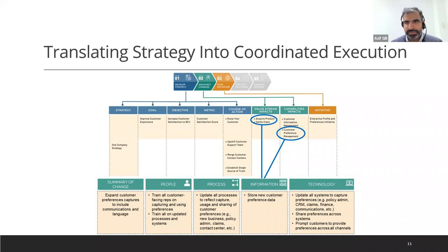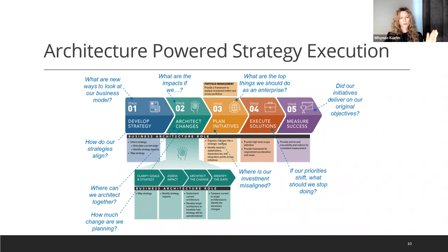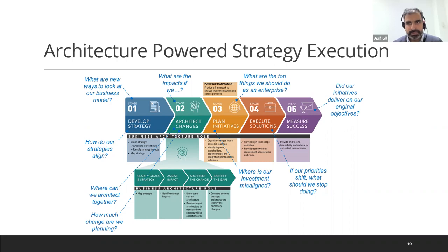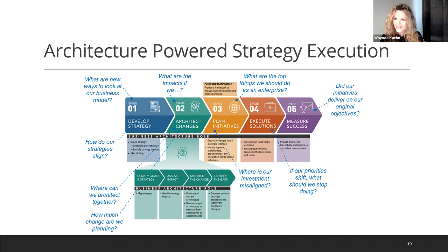Question: when you say 'architecture,' are you referring to EA or business architecture? Answer: enterprise architecture — business and IT architecture together; however you define it, application, data, tech, security. A second question suggests this looks like an IT value chain. Clarification: this is utterly about the business — not IT. I spend most of my days talking to business leaders with this view. It's about how all teams work together to make ideas real. IT is an important enabler, but this is meant to be a business view.